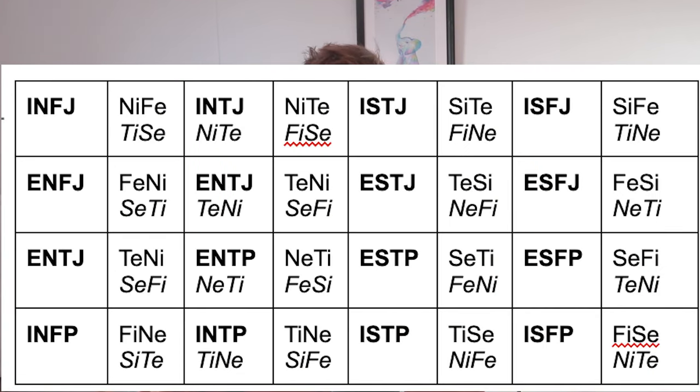Which type has which function? INFJs have NI and FE, and as their tertiary and inferior, they have TI and SE. ENFJs have FE and NI, and as their inferior, they have SE and TI. That's a good table to check in on. You're going to kind of have to use this one as a cross-reference in the beginning, but over time you're going to find you won't need it. Just use that one as a cross-reference.